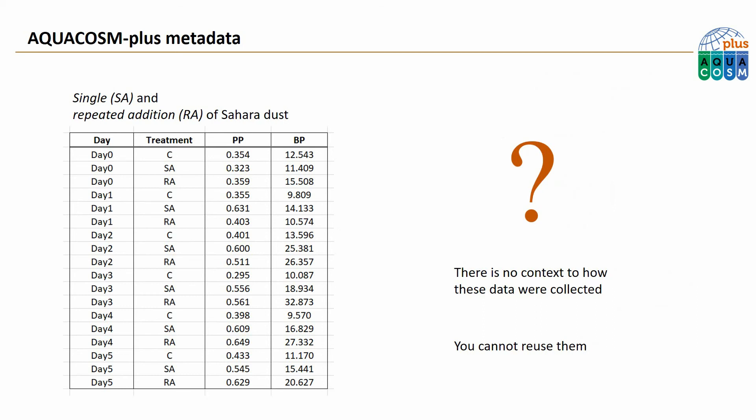Lacking this information, you have no way of understanding and interpreting the data, so you cannot reuse them. On the other hand, if you had this important information about this dataset — its metadata — you would be able to use it in whatever way you see fit.